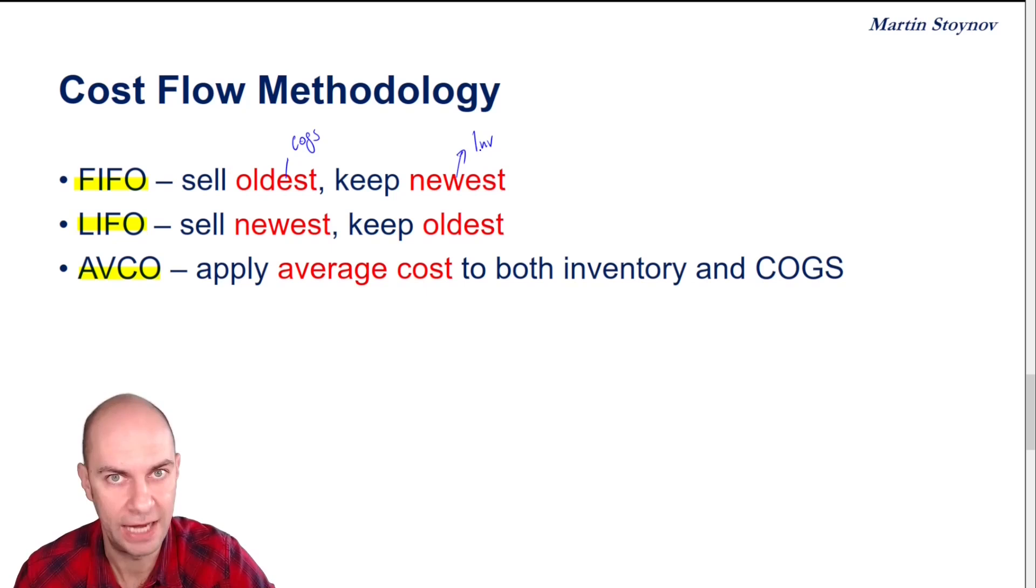The second system is LIFO. LIFO stands for Last In, First Out. So the newest, most expensive units get kicked out into COGS. So that gives me the higher COGS figure, assuming an inflationary environment. But if I've kicked out the most recent units into the P&L, then the oldest units have been kept in my inventory, and the oldest units are the cheapest inventory. So LIFO will tend to give me a much lower inventory valuation relative to FIFO.